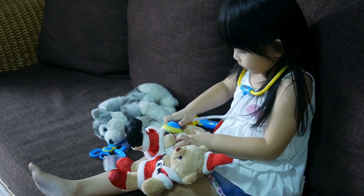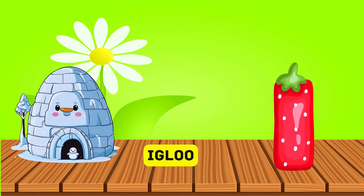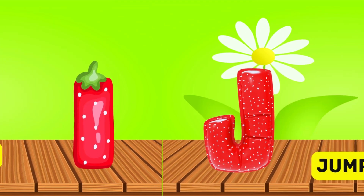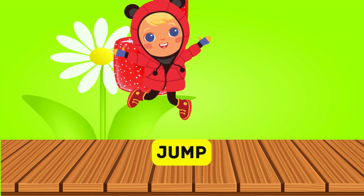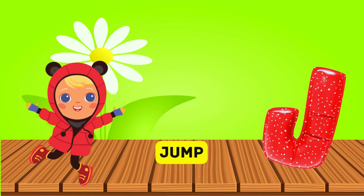I is for igloo, i-i-igloo. J is for jump, j-j-jump.